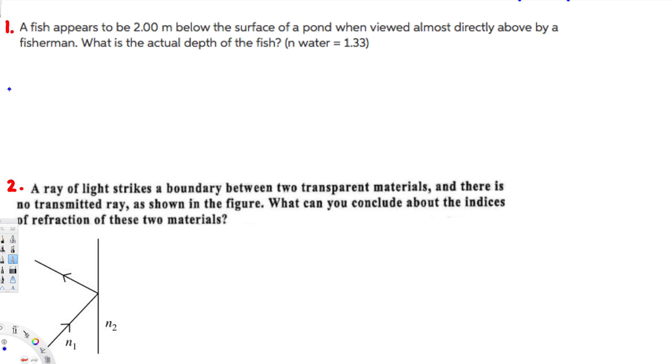Hey, what's going on guys, let's do this problem right here. This question is asking: a fish appears to be two meters below the surface of a pond when viewed almost directly above by a fisherman. What is the actual depth of the fish?